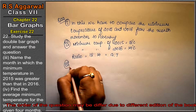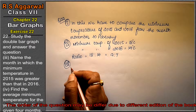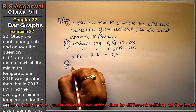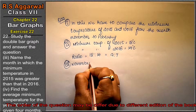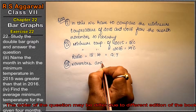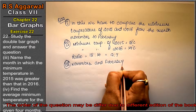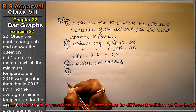Let's do the third part. Third part asks: name the month in which the minimum temperature in 2015 was greater than in 2016. Which months have higher 2015 temperatures than 2016? We will see November and February — in both these months the temperature is higher than in 2016.